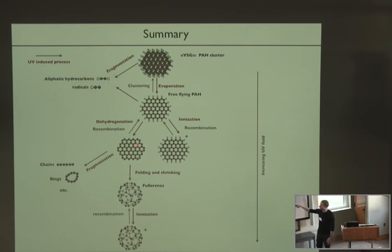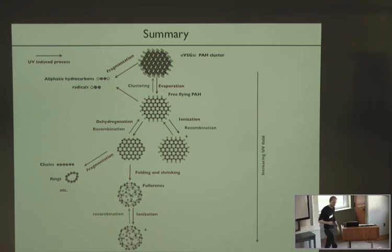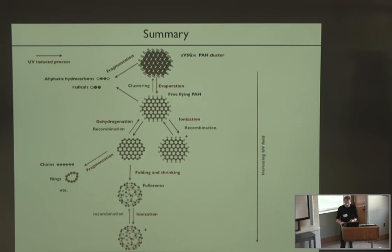Smaller than about 24 or 60 carbon atoms, these cages will fragment and form chains. I don't know how stable these would be in this kind of environment, but eventually they can go back to atomic carbon. And I think that's it. Thank you.